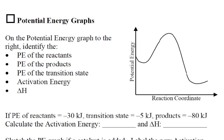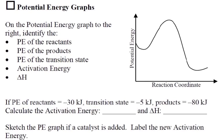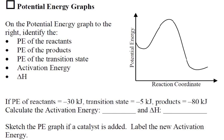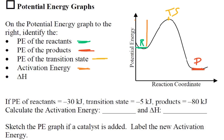Now, potential energy graphs. On the potential energy graph to the right, identify the potential energy of the reactants — right here, that's the reactants. Do it for the products — here's the products. The potential energy of the transition state — this is the transition state. The activation energy is the energy from the reactants to the transition state, and the symbol for that is E sub A.